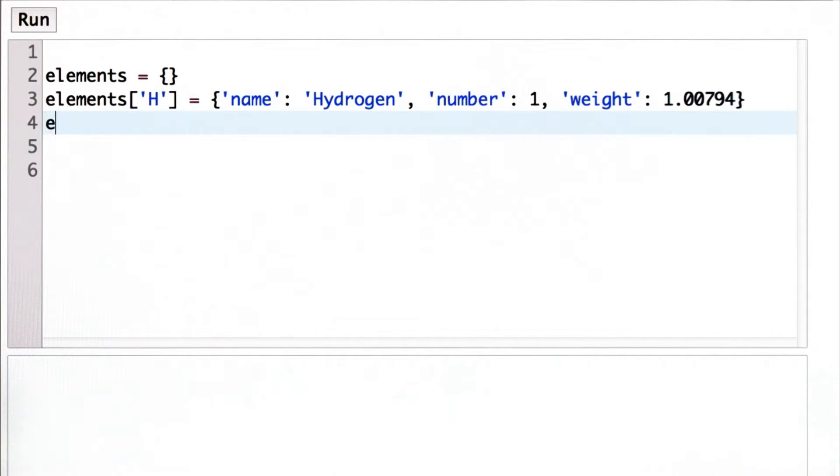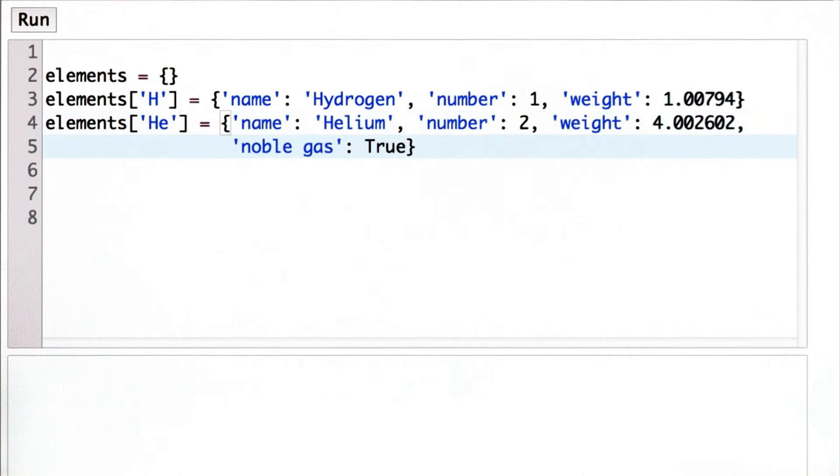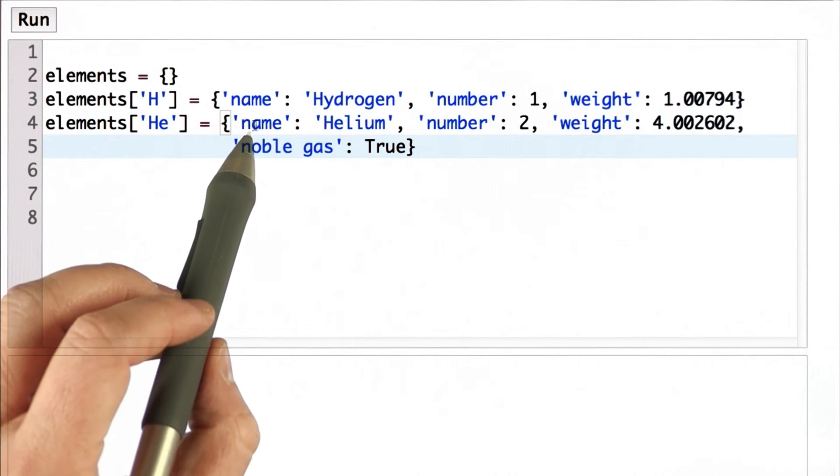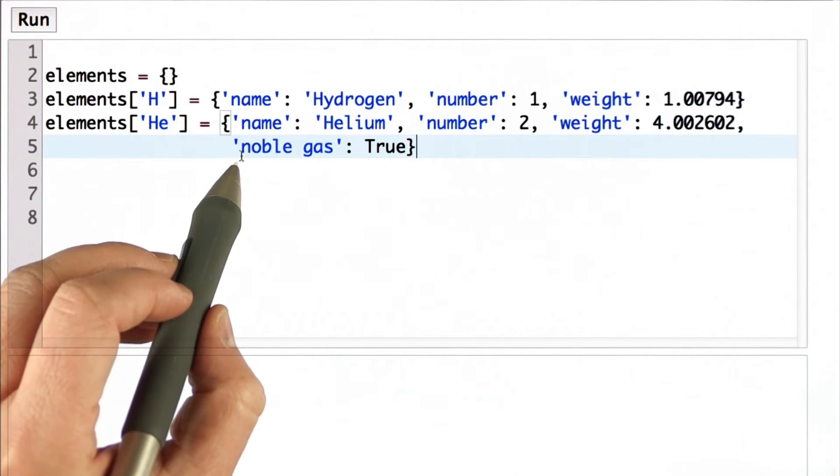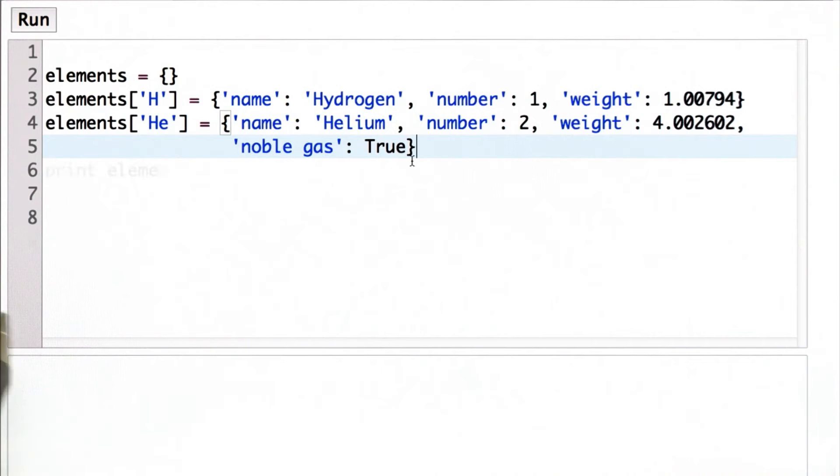We'll add another element to our dictionary. And so for helium, we have the same name, number, and weight keys. And so for helium, we have an extra entry that says it's a noble gas, and the value of noble gas is true.